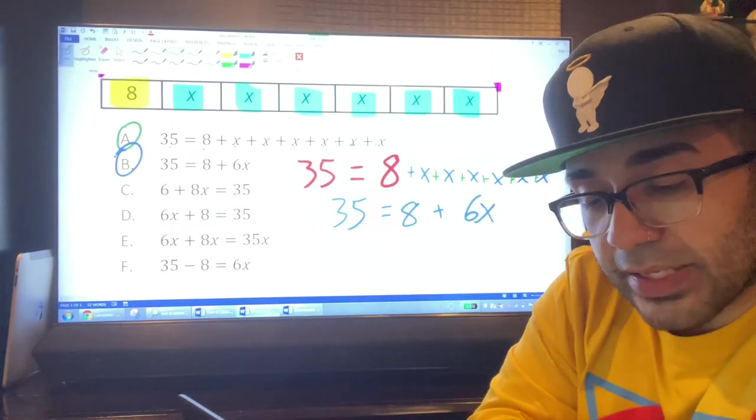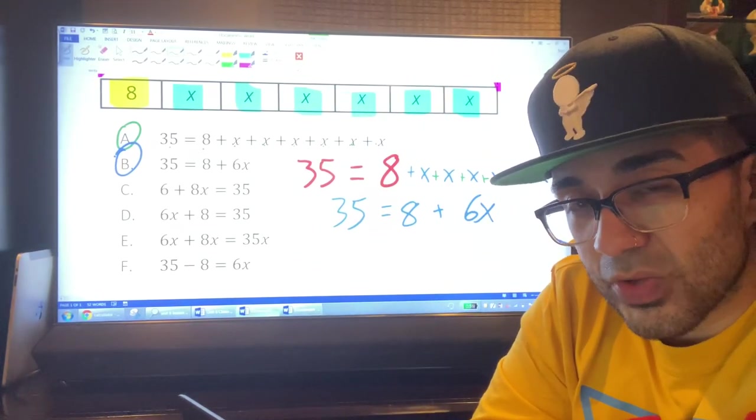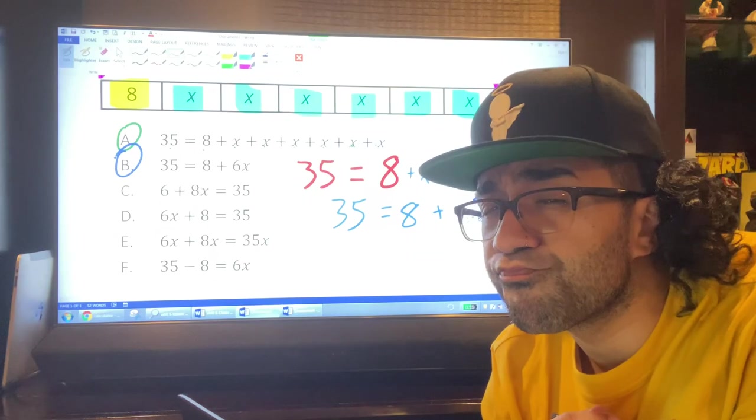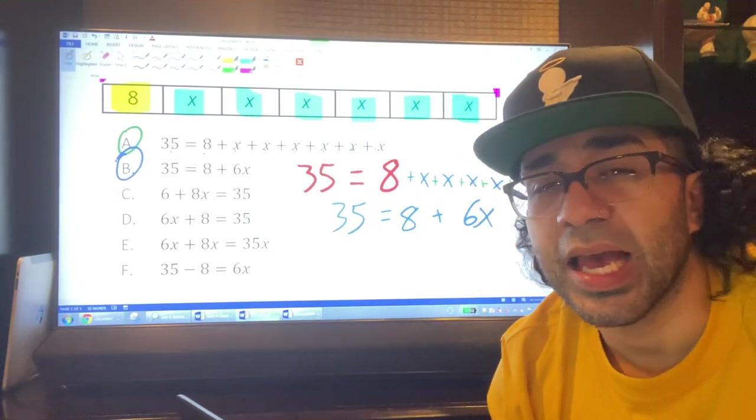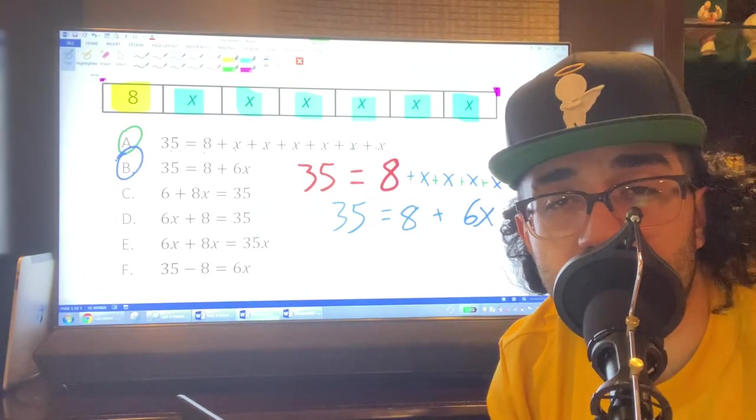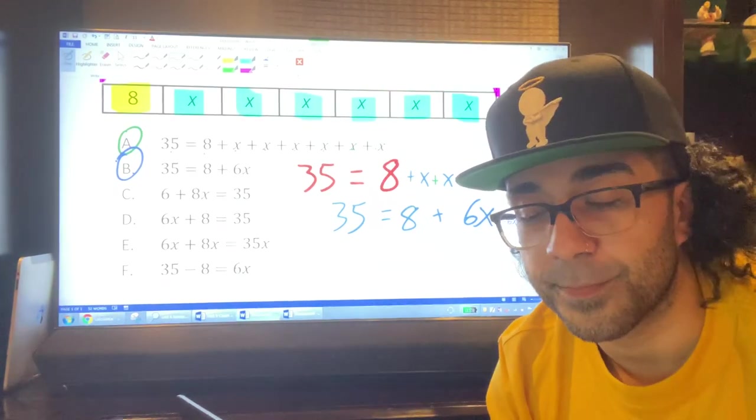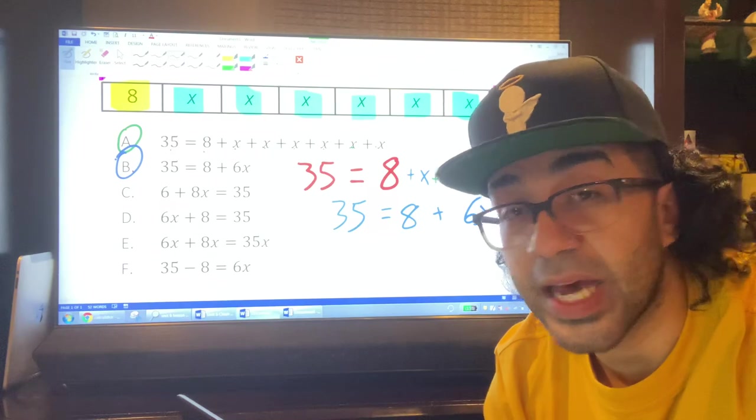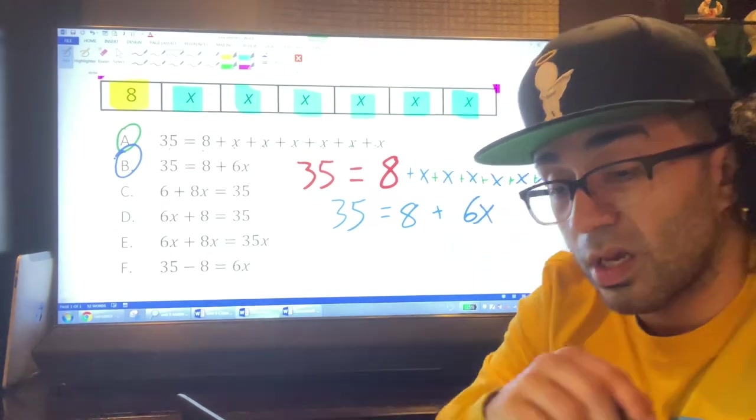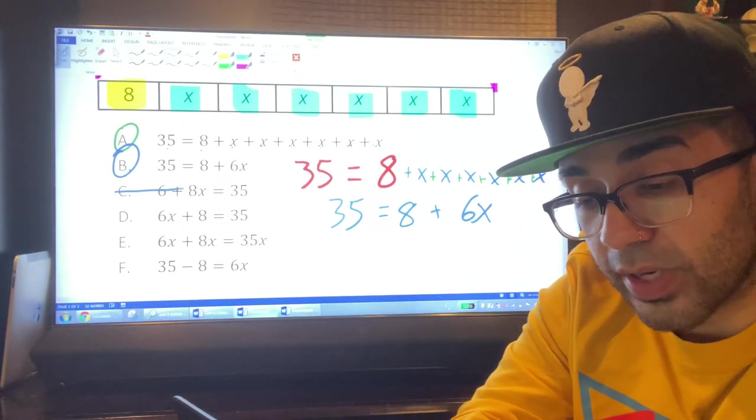Let's look at C. We have 6 plus 8X equals 35. Well, how many times did X show up? My mic is dope, right? Showed up six times, not eight, six. So this doesn't work. This equation doesn't work.